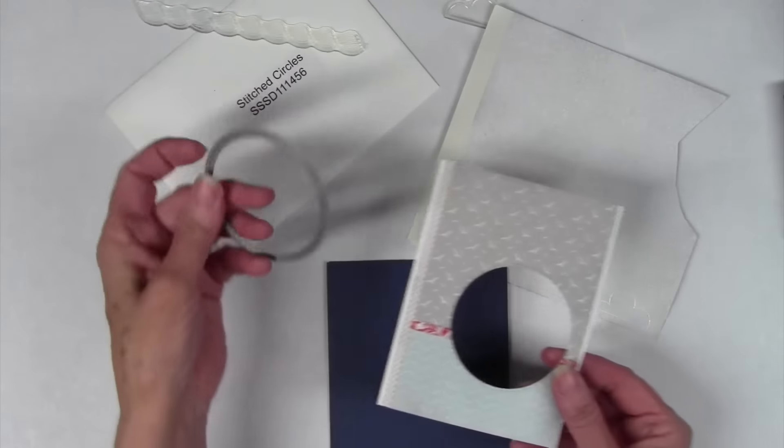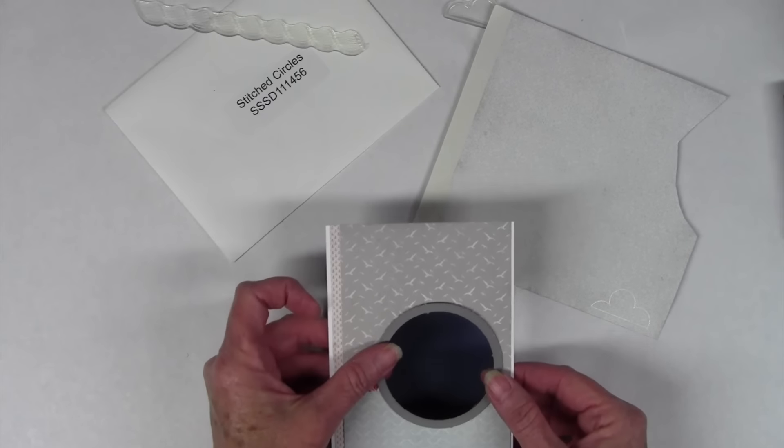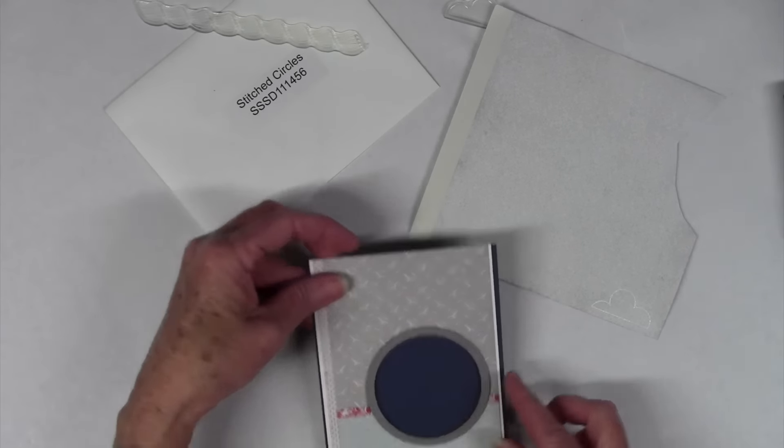To cut out my circle I've used the stitched circles and so I just placed that right where I wanted it and then I ran that through my die cut machine.